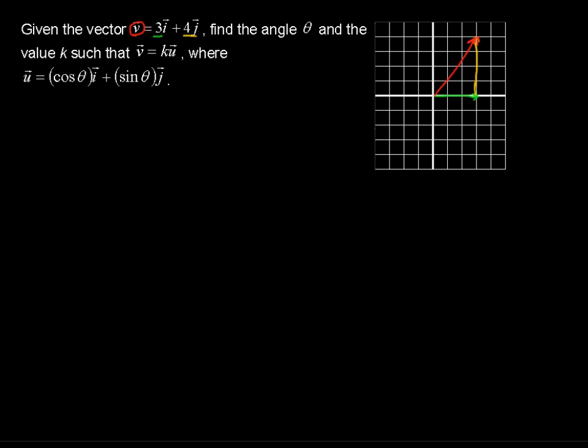Now what we're looking for, what the question is looking for, is this angle theta. It says a lot of other words there, but this is what it's really looking for. What is this angle theta? And then it's asking for the magnitude of this vector v.